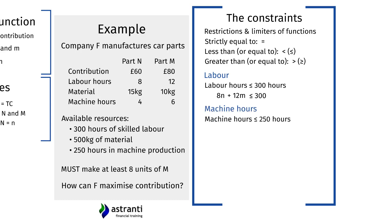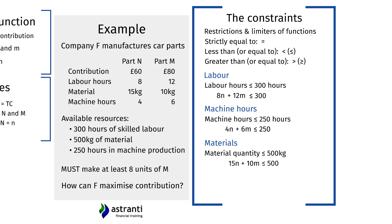For machine hours: Part N requires 4 hours per unit and Part M requires 6 hours, giving us 4N + 6M ≤ 250. For material: 15 kilograms go into each unit of Part N and 10 kilograms into every unit of Part M, giving us 15N + 10M ≤ 500.